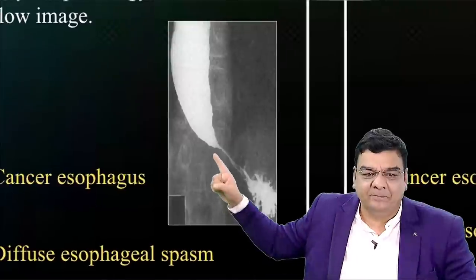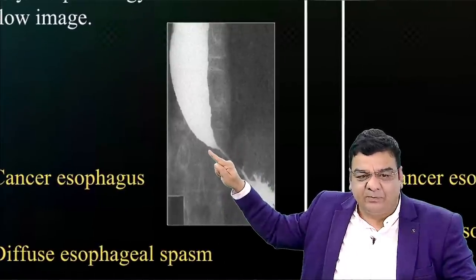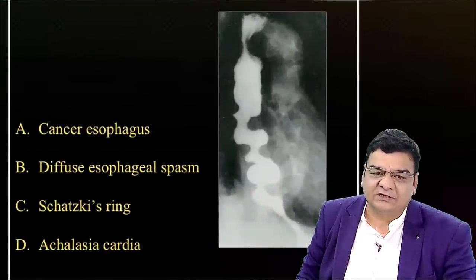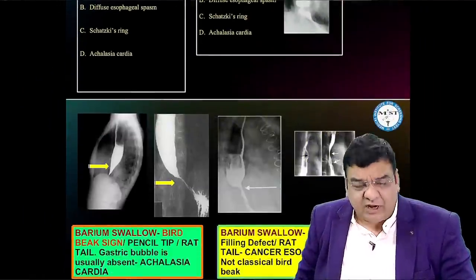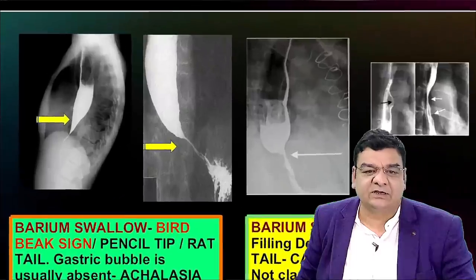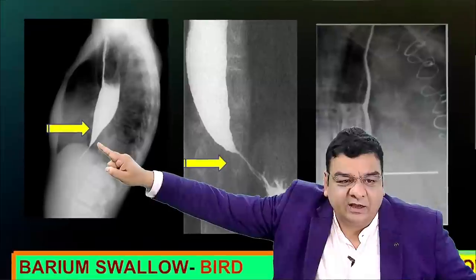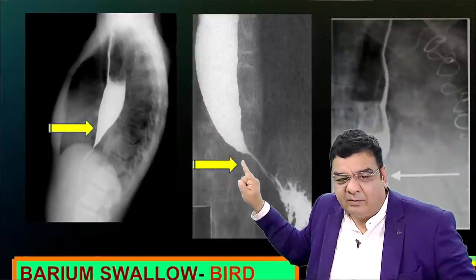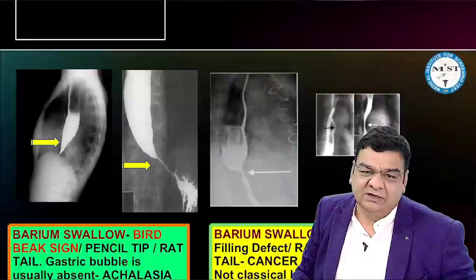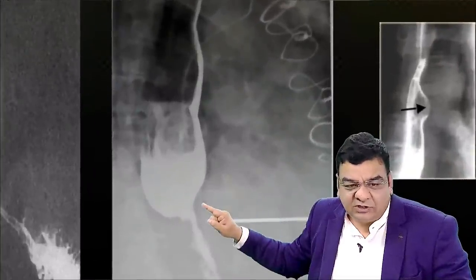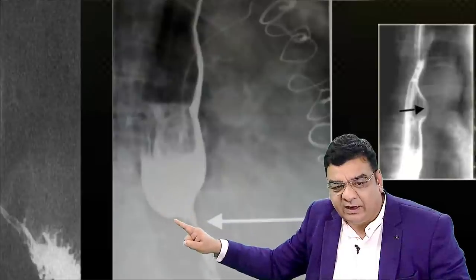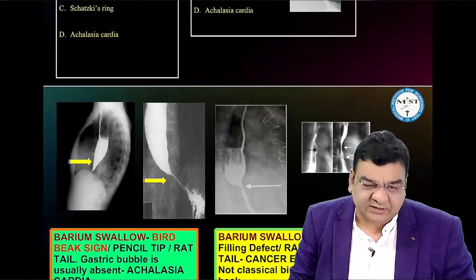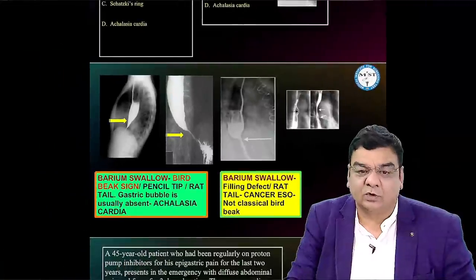Another important question: examiners love the image-based question of achalasia cardia. Focus on the sharp pencil tip or bird beak appearance. There is also the corkscrew esophagus image for diffuse esophageal spasm. To differentiate achalasia from cancer esophagus: achalasia shows sharp tapering from both sides giving a classical bird beak or pencil tip appearance, while malignancy does not show this sharp bird beak tapering. Commonly, questions focus on achalasia cardia — do not miss this.